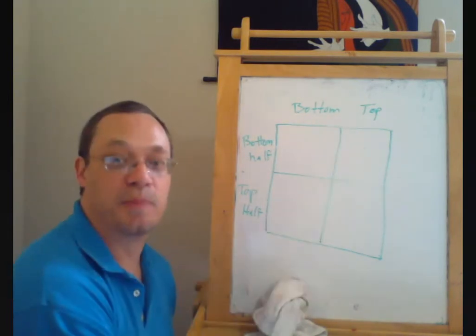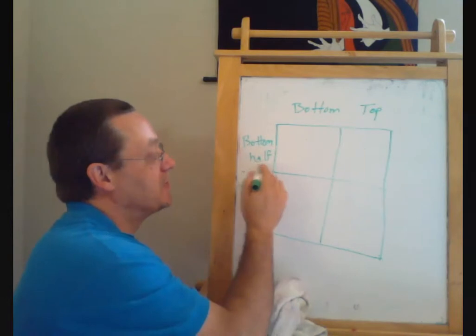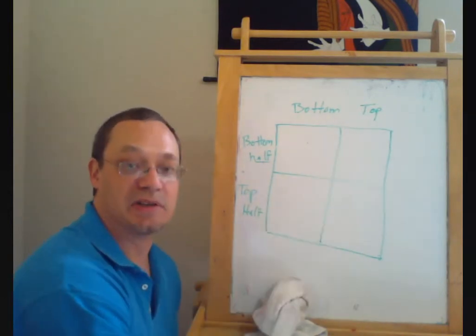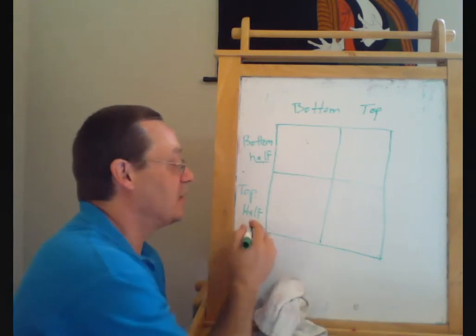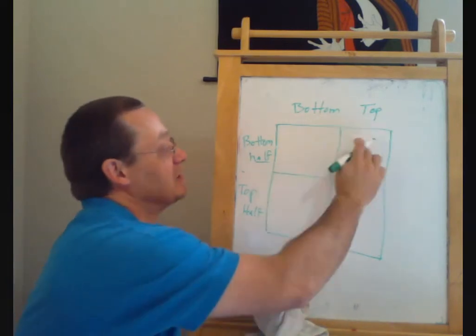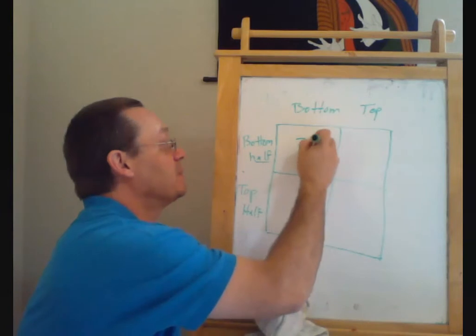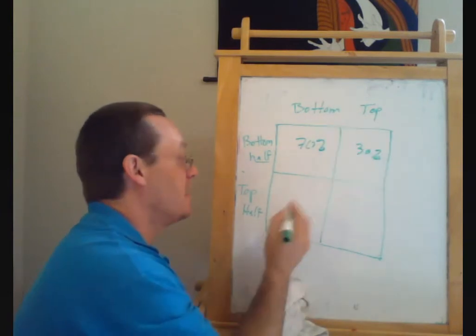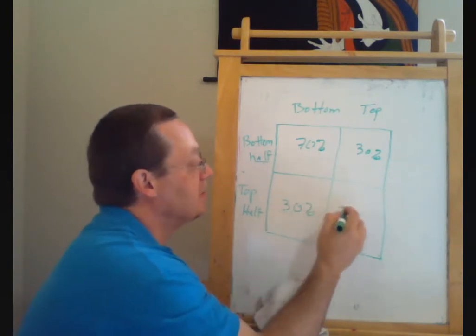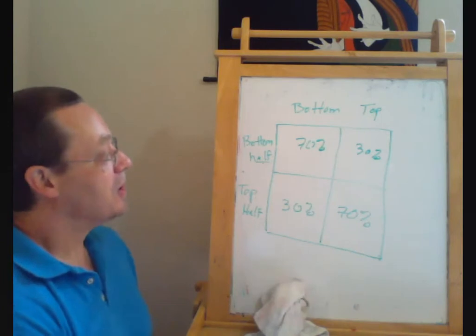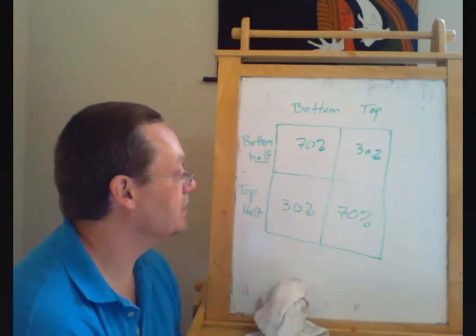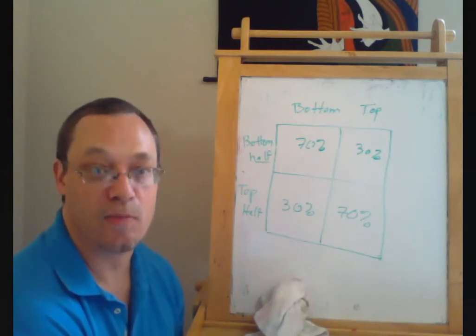And if the world were completely random, this and this would both be 50-50. So if you started in the bottom half, you'd have a 50% chance of staying in the bottom half and a 50% chance of ending in the top half. Or if you started here, and the world were completely random, these two numbers would be 50-50. But we might say, see that this is 70% and this is 30% and this is 30% and this is 70%.